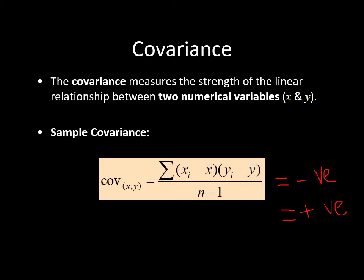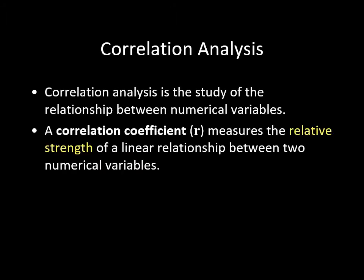The reason is that the covariance number — whether it's close to zero, negative, or positive — depends on the scale of measurement of the X and Y variables. That's why people don't often use covariance; instead, they use the correlation coefficient.